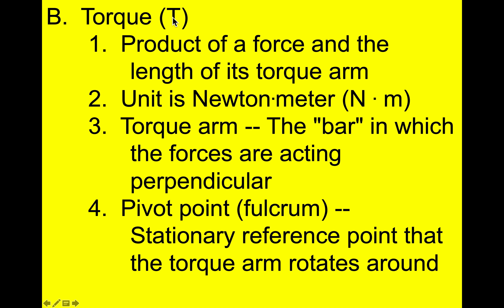Torque is the product of force and the length of its torque arm, measured in Newton meters. The torque arm is the bar on which forces act perpendicular to it — typically the object you're pushing against, like the handle of a wrench. The pivot point, sometimes called the fulcrum, is the stationary point that the torque arm rotates around. For a wrench, the pivot point is the bolt you're exerting force against, and the handle is the torque arm.